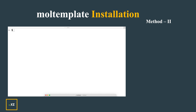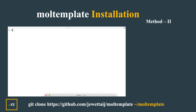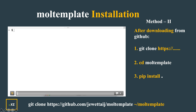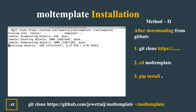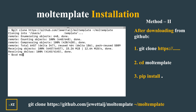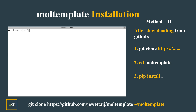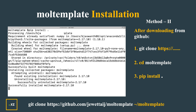Now we go to the second method. In Method 2, you download it from GitHub using the git clone command. After you do the git clone, it's a very easy method. You can see that MOL template is already cloned. You go to the MOL template folder, press clear, and do pip install dot. MOL template is then successfully installed.